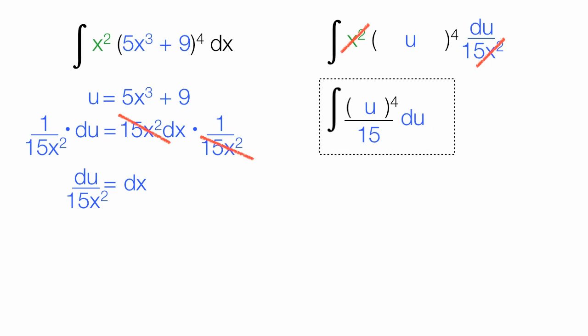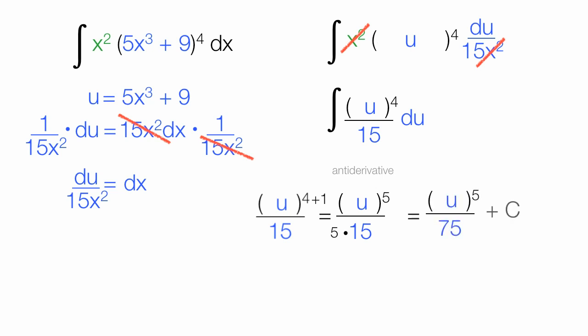Now this looks like something I can integrate or take the anti-derivative of. So, I add 1 to the exponent, so 4 plus 1. This is equal to u to the fifth power divided by 15. Whatever this new exponent is, 5 in this case, I multiply it times the denominator. This gives me u to the fifth power divided by 75 plus some constant number.